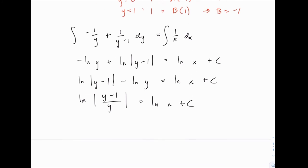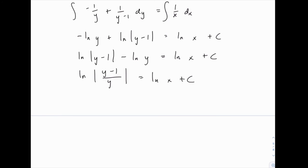And then we have logs on both sides, so we can again raise e to the power of both sides as we did in a previous example. So on the left side we just get (y minus 1) over y. On the right side we get e to the C, which we'll just call k, times e to the ln x, which is just x.